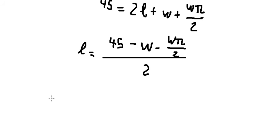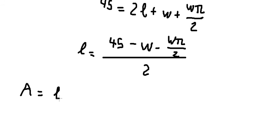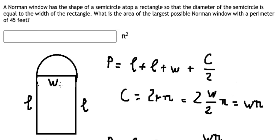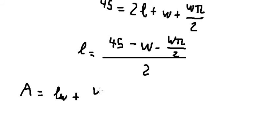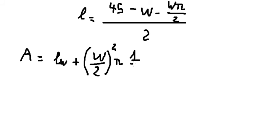Now we need to find the total area of the window. The first part is the area of the rectangle, which is L times W. The second part is the area of the semicircle, which is one-half times π times (W/2) squared, since the radius is W divided by 2. We multiply by one-half because it is only a half circle.